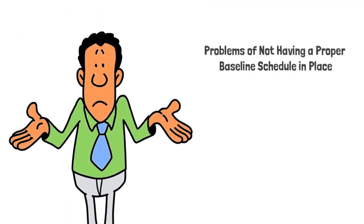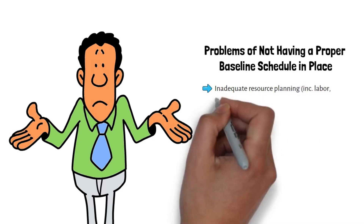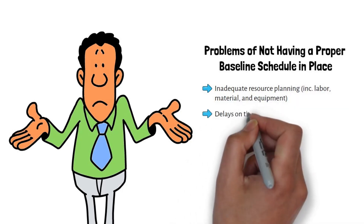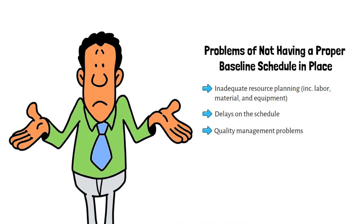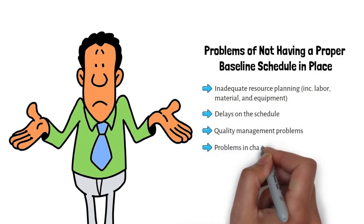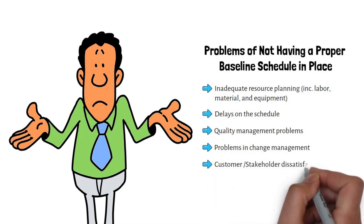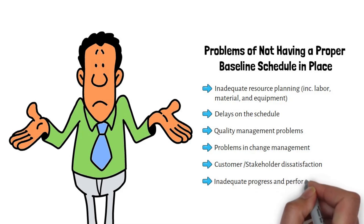Problems of not having a proper baseline schedule include: inadequate resource planning in labor, material, and equipment; delays on the schedule; quality management problems; problems in change management; customer and stakeholder dissatisfaction; and inadequate progress and performance reporting.